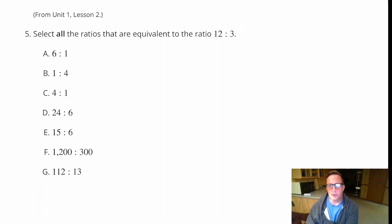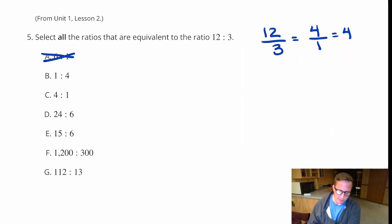Select all the ratios that are equivalent to the ratio of 12 to 3. Now 12 to 3, it could also be written like this in fraction form, 12 to 3. Now if we simplify 12 to 3, that just means 12 divided by 3. 12 divided by 3 is 4. So you can think of it as 4 to 1 or 4. So A, definitely not. 1 to 4, no, it's not the same as 4 to 1. This one's good, right here. 24 to 6. Does that equal the same thing? 4 to 1 equals 24 to 6. If you multiply that by 6, 4 times 6 is 24, and 1 times 6 is 6. So that's equivalent.